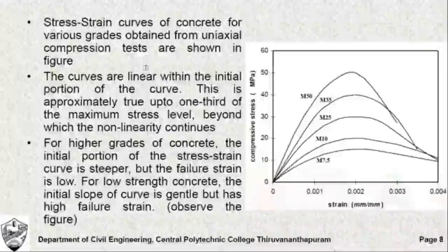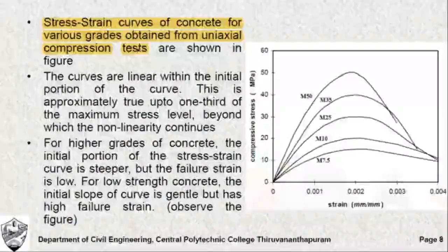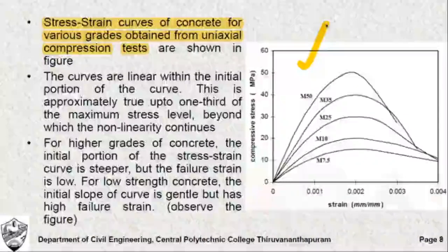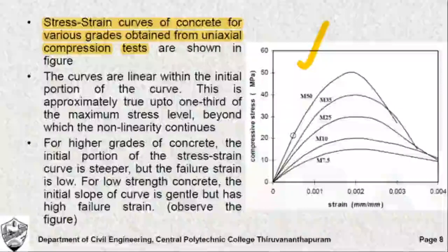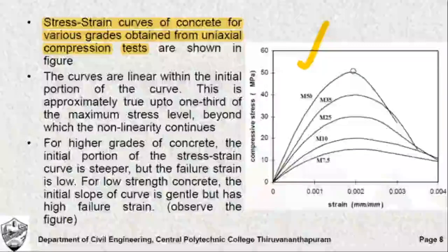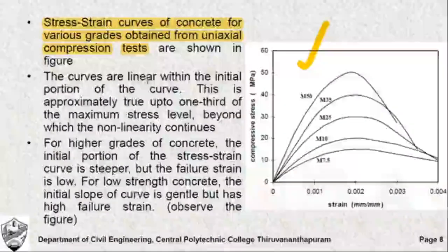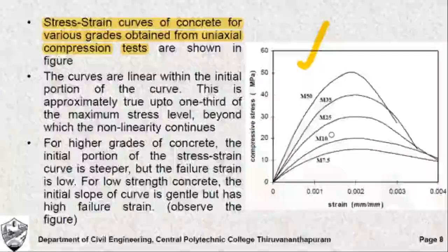Now let us study about the stress-strain behavior of concrete when subjected to uniaxial compression tests. The results of several uniaxial compression tests on different grades of concrete are shown in this figure. As you subject a concrete specimen to compressive load, the stress in the material increases in a linearly elastic fashion. After a particular value of load, it loses its linearity, begins to behave non-linearly, increases further, and reaches a maximum value. Beyond this, the stress in the material declines. Higher grades of concrete have a steeper initial portion of the curve, while lower grades of concrete fail at larger strains compared to higher grades.